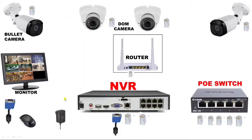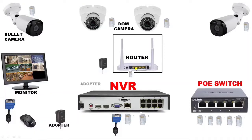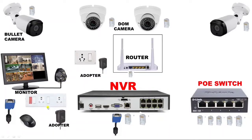For NVR input power supply, we connect a 12V DC adapter to the NVR. Similarly, the router also requires 12V DC, so we connect one adapter to the router. We connect a three-pin plug for the monitor's input power supply. We also connect one switchboard for the router power supply and a second switch for the monitor and NVR input power supply. It's a very basic and simple setup.